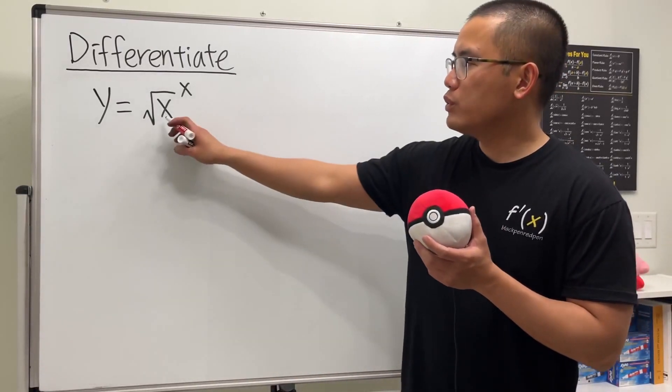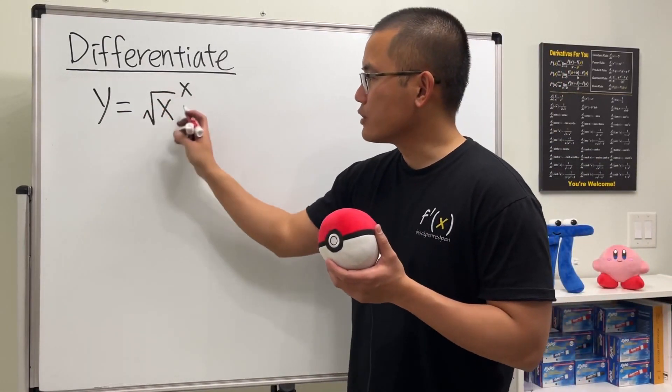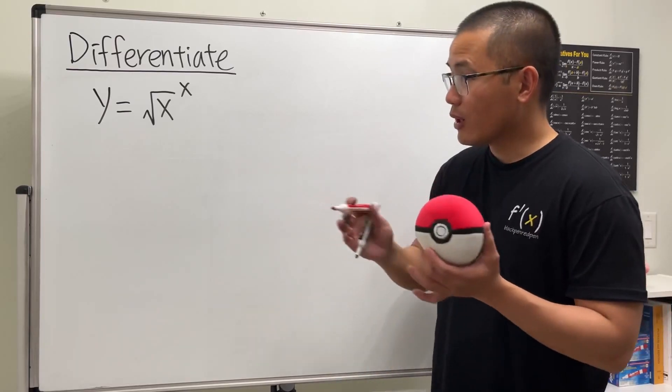Let's find the derivative for square root of x raised to the x power. We notice that the base is a function and likewise the power. However, before we do the natural log both sides business, let's take a look at this square root.